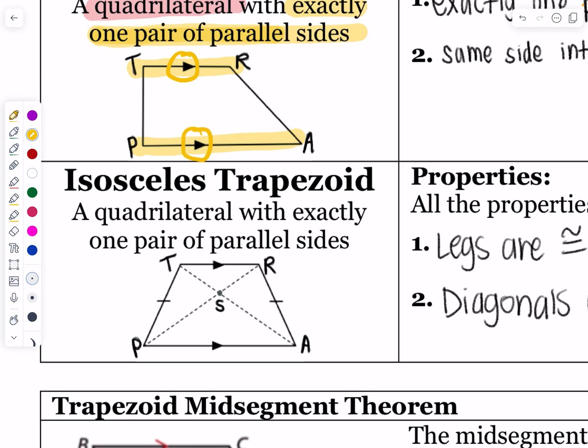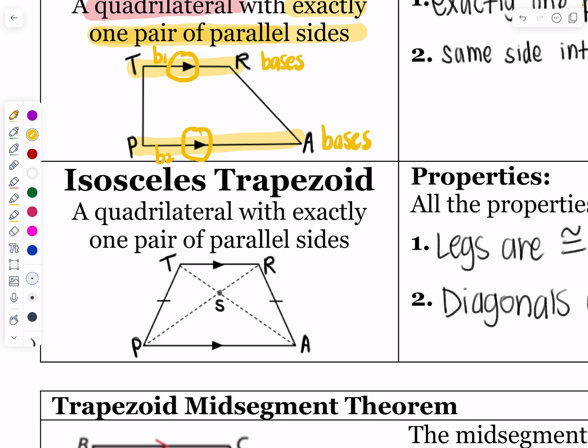The parallel sides are called the bases — base one and base two. You can label them either way. B stands for the bases, and those are going to be parallel to each other.